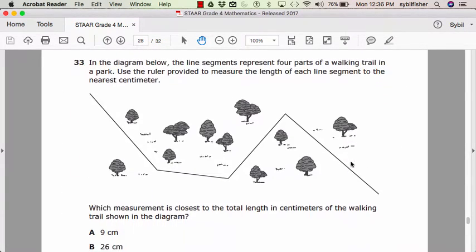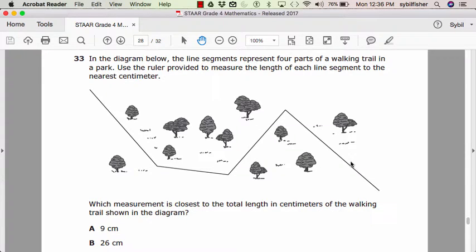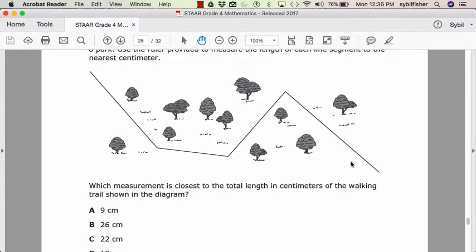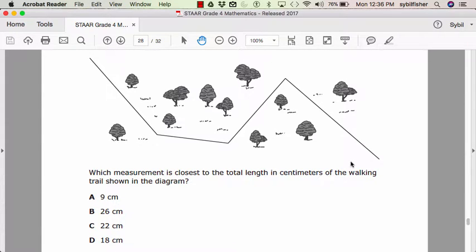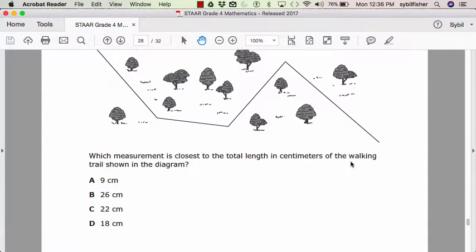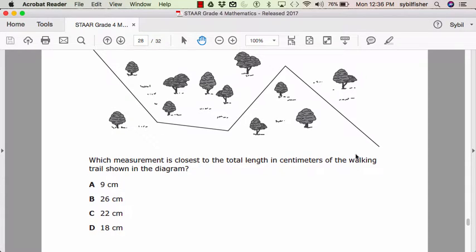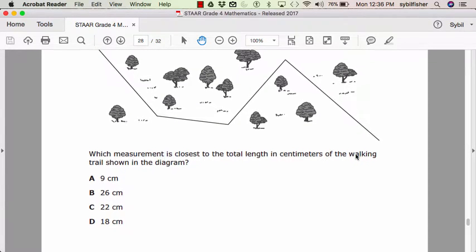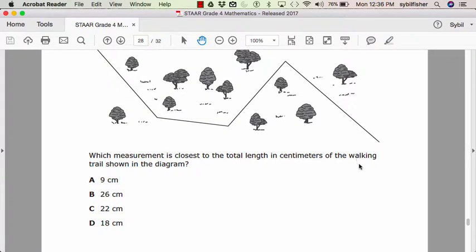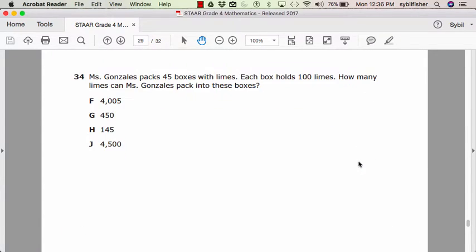Number 33. In the diagram below, the line segments represent four parts of a walking trail in a park. Use the rule of comparison to measure the length of each line segment to the nearest centimeter. Which measurement is closest to the total length in centimeters of the walking trail in the diagram? A, 9 centimeters. B, 26 centimeters. C, 22 centimeters. Or D, 18 centimeters.